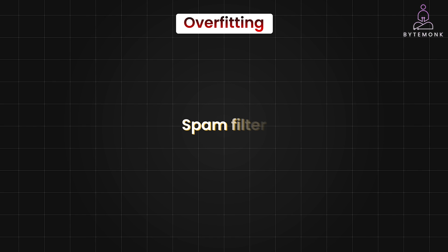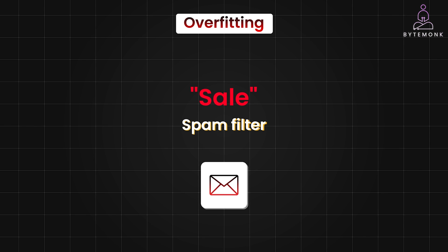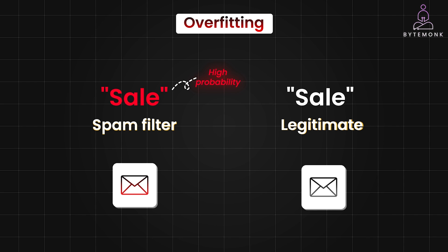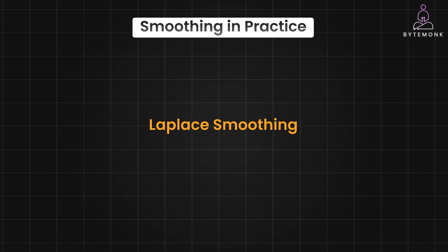For example, consider a spam filter trained on a dataset where the word 'sale' appears frequently in spam emails. Without smoothing, the model might assign a very high probability to any email containing 'sale' being spam. However, 'sale' can also appear in legitimate marketing emails. Smoothing would lower the probability associated with 'sale,' allowing the model to consider other words and context to make a more informed decision. Laplace smoothing is the simplest form of smoothing. It addresses the issue by adding a small constant — usually one — to both the numerator and the denominator of the probability calculations, which is why this technique is also known as add-one smoothing.